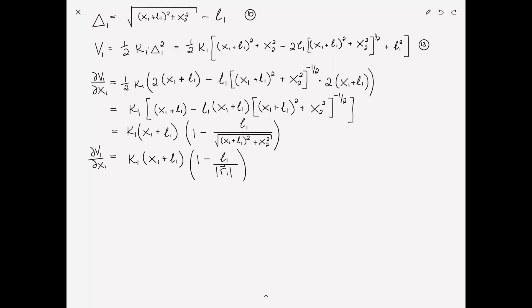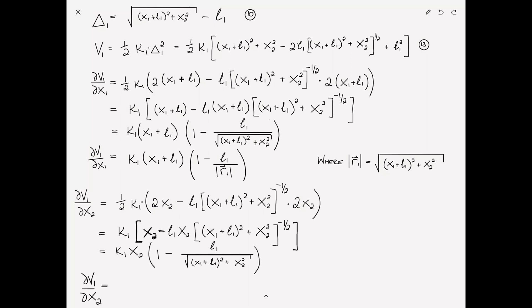I remind you that the magnitude of r1 is simply the square root of x1 plus l1 squared plus x2 squared. We had this on the previous page. Then similarly, I can take the derivative of v1 with respect to x2. I'm going to save you the details, but when I go through all the math, this reduces to k1 times x2 times quantity 1 minus l1 over r1. This is the same quantity that we saw up here. Let's give these some numbers: 14, 15, and 16.